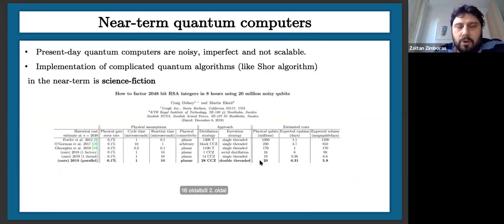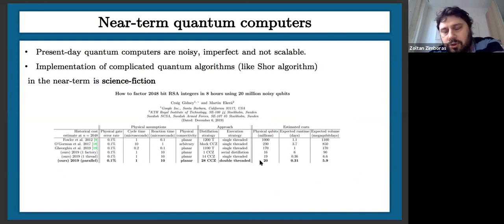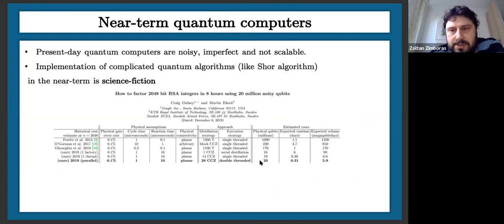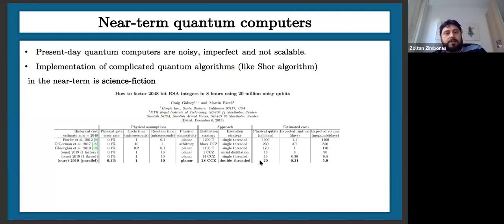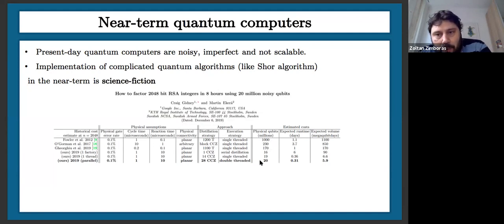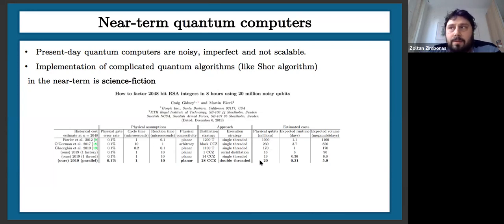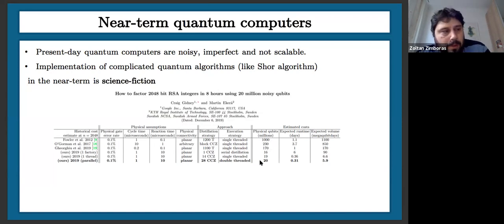I'm going to continue where Akos left off, talking about near-term quantum computers — but not how to make them work, more about what type of algorithms we can learn from. The present-day quantum computers are noisy, imperfect, and not really scalable. If you want to scale them up to millions of qubits, you have to do something new with the technology — even for superconducting qubits, you have to change the cooling mechanisms completely.